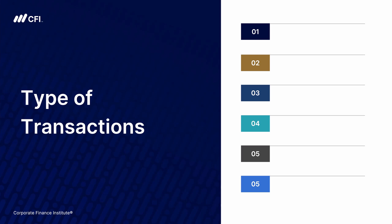There are six basic types of transactions that a company can engage in. The first type would be an initial public offering, or an IPO. This is when the company issues equity in the form of shares to the public for the first time. After an IPO, the company could do a follow-on offering — when the company wants to issue more equity to public shareholders.